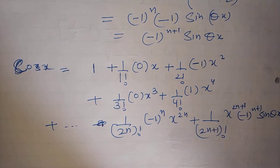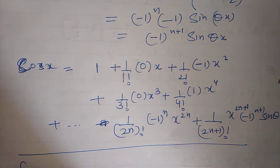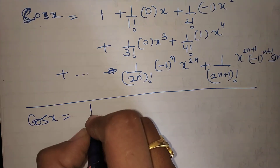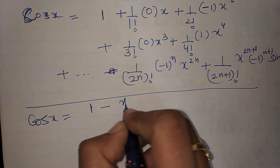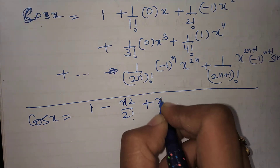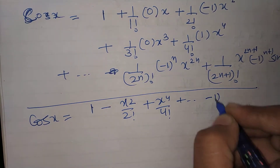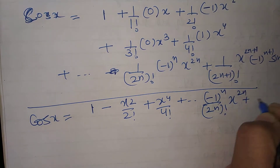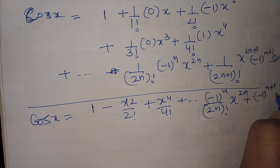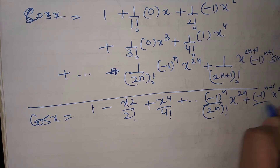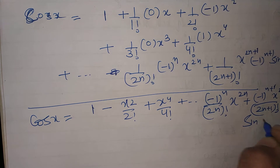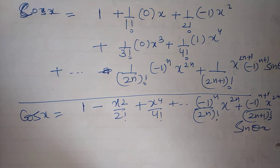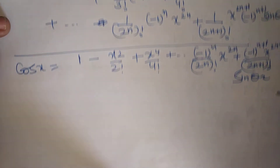Simplifying — removing terms where coefficient is 0 — we find cos x = 1 minus x²/2! plus x⁴/4! plus (-1)^n/(2n!) x^(2n) plus (-1)^(n+1) x^(2n+1)/(2n+1)! · sin(θx). So we have proved the required series. Next question.